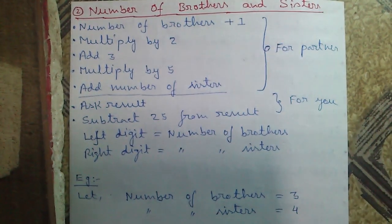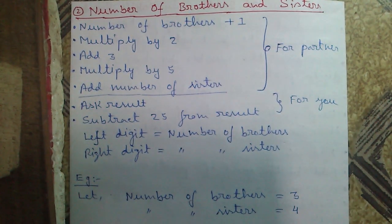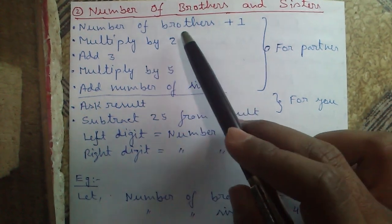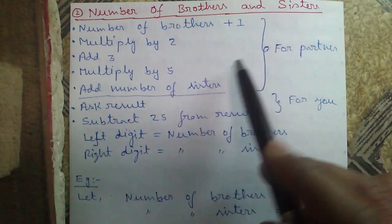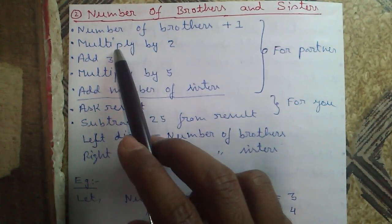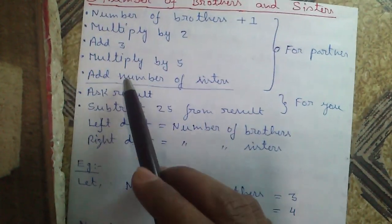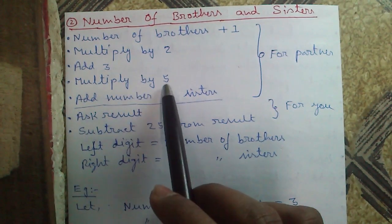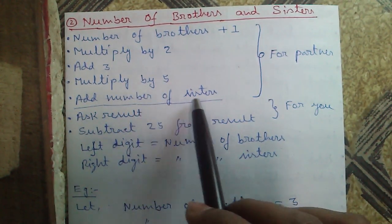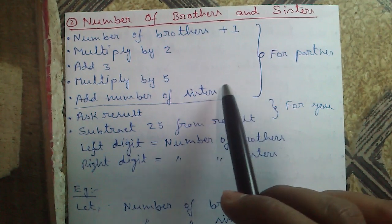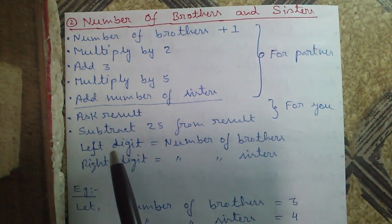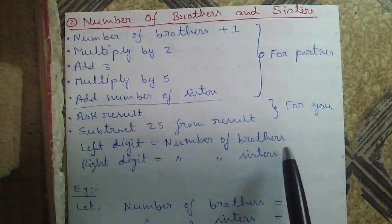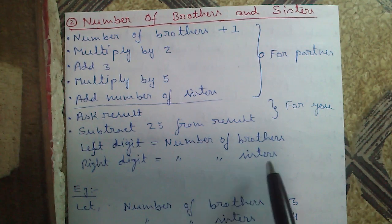Second trick: Number of brothers and sisters. Tell your partner to add 1 to their number of brothers, multiply by 2, add 3, multiply by 5, then add number of sisters. Ask the result from your partner and subtract 25. You will get a 2-digit number where the left digit equals number of brothers and the right digit equals number of sisters.